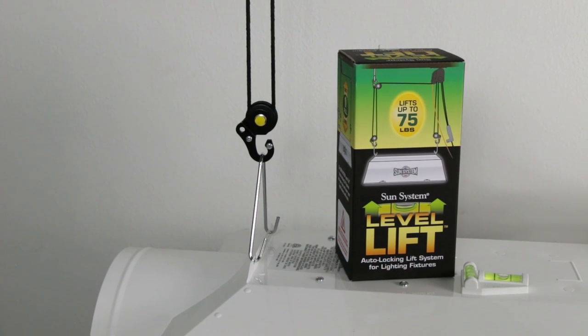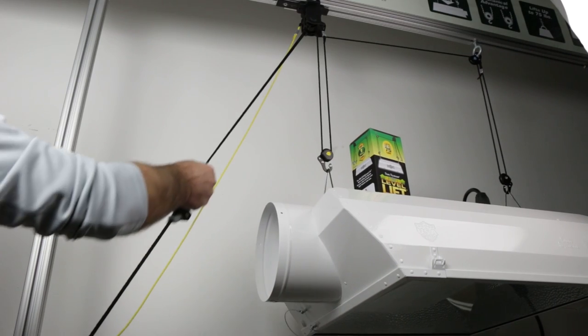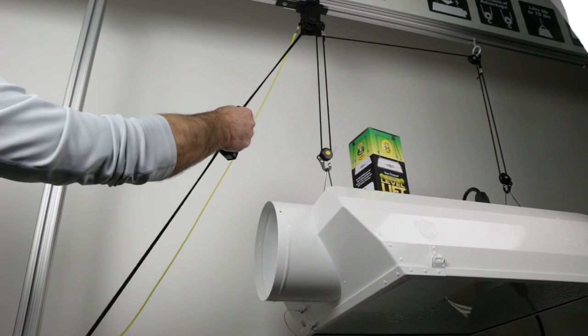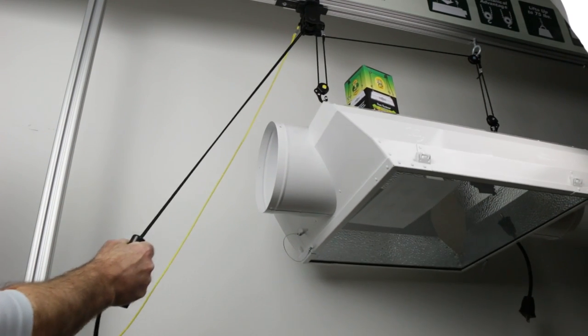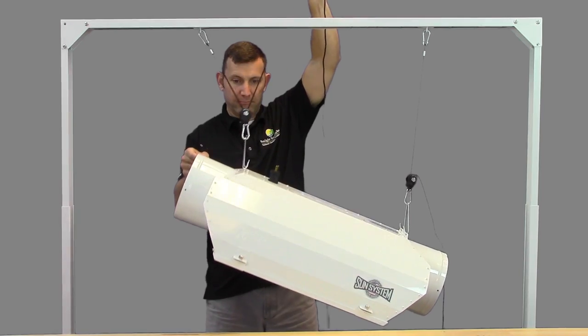Introducing the new LevelLift Auto-Locking Lift System. This pulley-driven system lets you raise and lower your light fixtures with the ease of a single pull. Traditional light hangers are operated one side at a time.